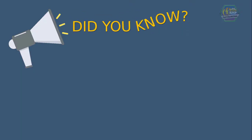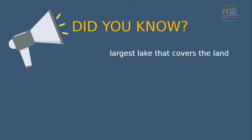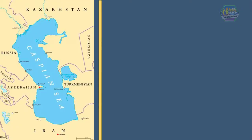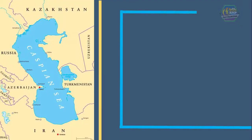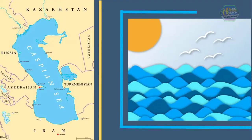Fun fact, learners — did you know that the largest lake that covers the land is the Caspian Sea? Yes, you heard it right — sea. But technically, it is a lake since it is surrounded by land. And it is salty too. Nevertheless, it is as big as a sea, that's why it's called the Caspian Sea.